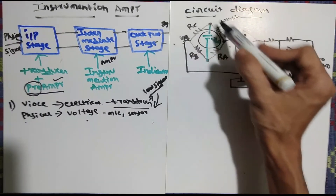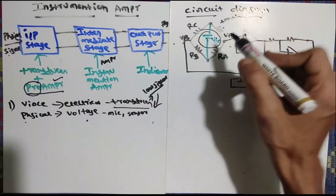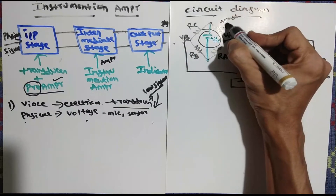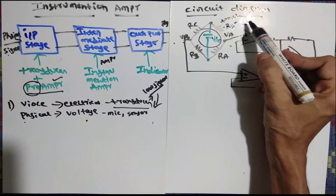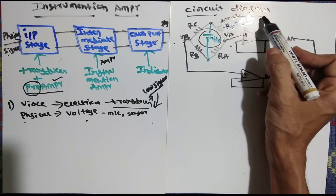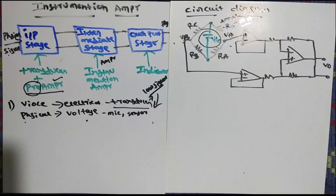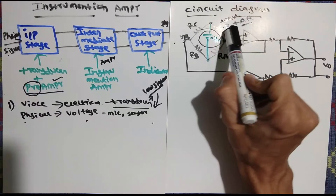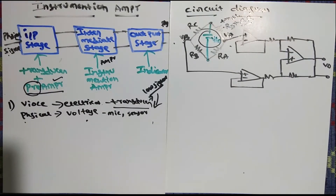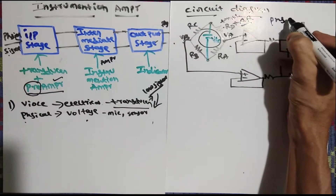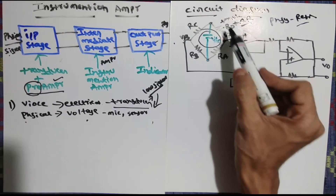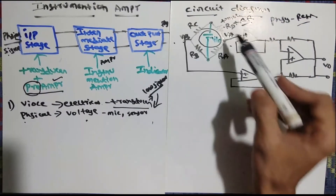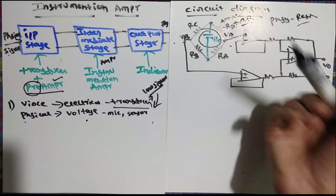The bridge must be balanced for proper operation. The transducer resistance is represented as Rd plus ΔR, where delta R means the change in resistance. The transducer is a resistive type — whatever physical signal is present, it gives a corresponding resistance change. When resistance changes, the bridge imbalance captures what is happening.